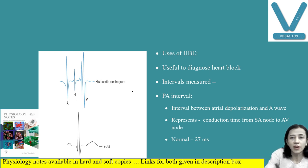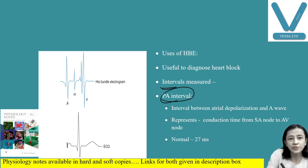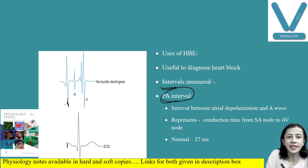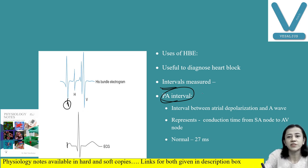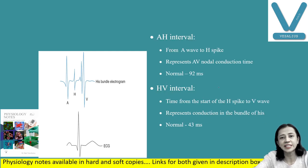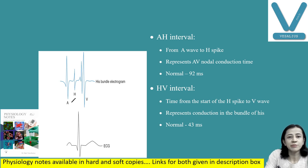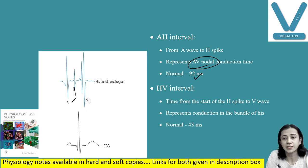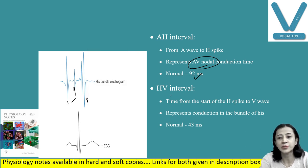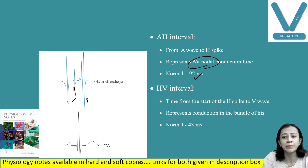The clinical significance of the His bundle ECG is that it is used in patients with heart block — most commonly to diagnose bundle branch block. Three intervals are measured: the PA interval, from the onset of the P wave to the A wave, represents conduction time from SA node to AV node, with a normal value of 27 milliseconds. The AH interval, between the A wave and H spike, represents conduction time through the AV node — normally 92 milliseconds. The HV interval, between the H spike and V wave, is 43 milliseconds and represents conduction through the bundle of His and bundle branches.